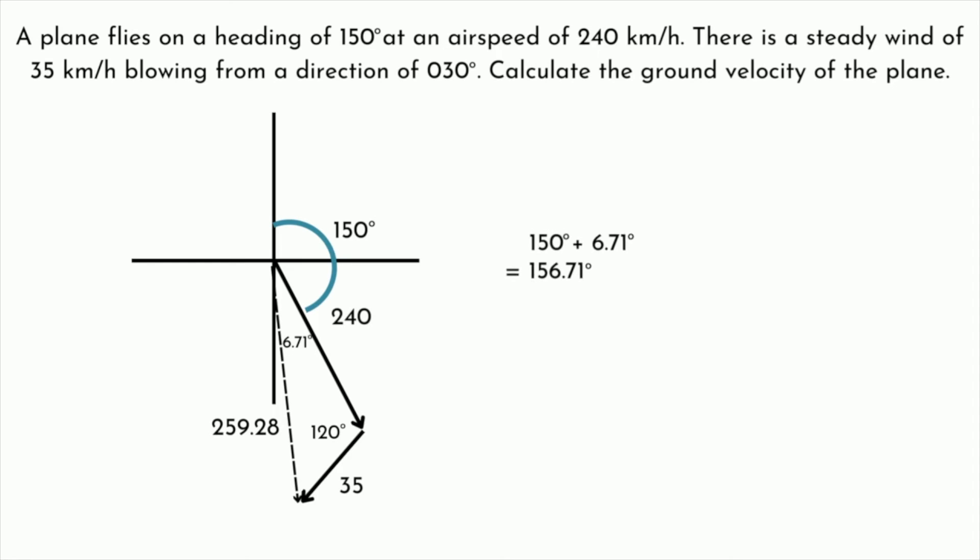So after all that hard work and analysis, we can say that the ground velocity of the plane is going to be 259.28 kilometers per hour, and that's on a true bearing of 156.71 degrees. And so you can see why these problems tend to give people a lot of difficulty. A lot of work, a lot of steps, and a lot of prerequisite knowledge in here. Not only do we have to know how to draw true bearings, but we also need to know how to add vectors using the tip-to-tail method. And just for good measure, we're going to throw in some non-right trigonometry, as well as some zed-pattern angle relationships. Very complex problems that teachers love to put on vectors tests, so you'll want to go over this one a few times.